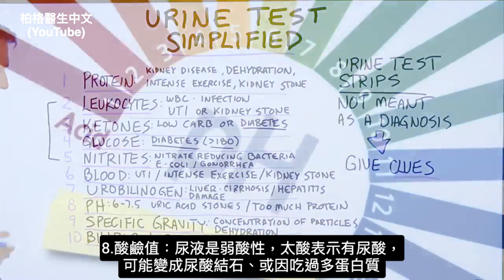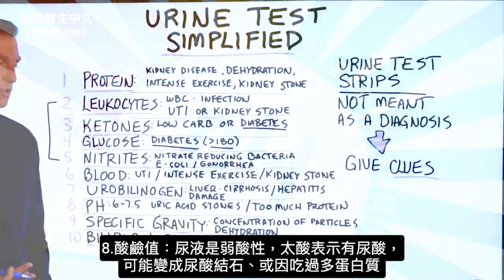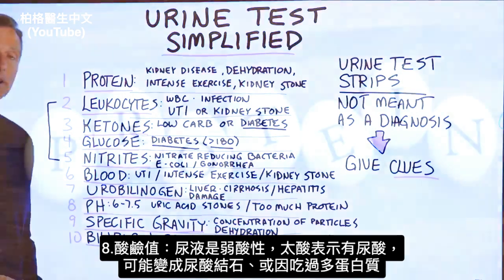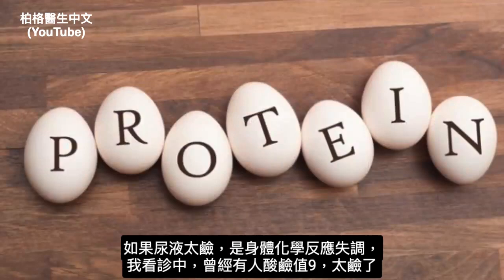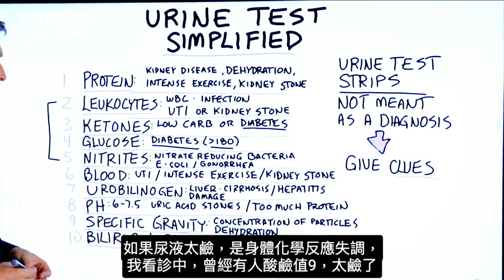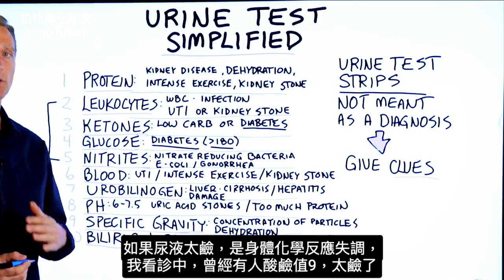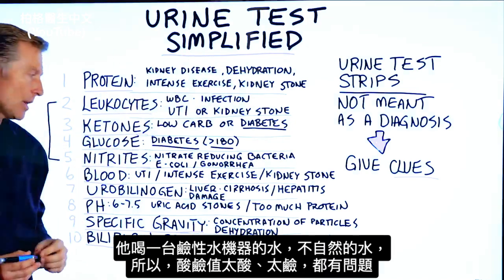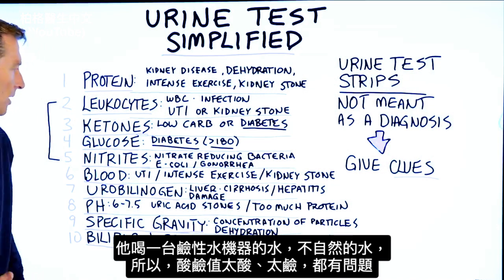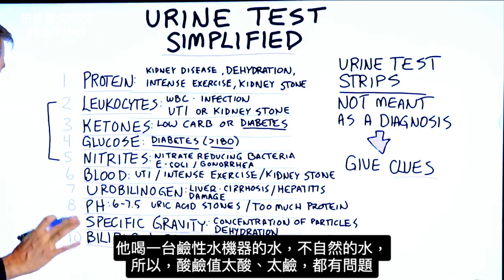Number eight, pH. The pH normally should be slightly acidic. If it's too acidic, that could mean you have too much uric acid and you're on your way to getting a uric acid stone, or you're consuming too much protein. If it's too alkaline, that can also mean your chemistry is off. I remember in practice seeing someone's pH at nine — way too alkaline — and they were using one of those machines to alkalize the water, which is an unnatural process. If your pH is too far one way or the other, there are going to be issues.